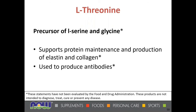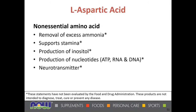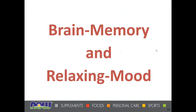L-threonine — not to be confused with L-theanine — is a precursor of L-serine and lysine, supports protein maintenance and production of elastin and collagen, and is used by the body to help produce antibodies. L-aspartic acid is a nonessential amino acid that aids in the removal of excess ammonia, supports stamina, and is involved in the production of inositol, nucleotides such as RNA and DNA that help in cell replication, and ATP energy production. Beyond its role as a neurotransmitter in the brain, aspartic acid has a number of roles throughout the body.